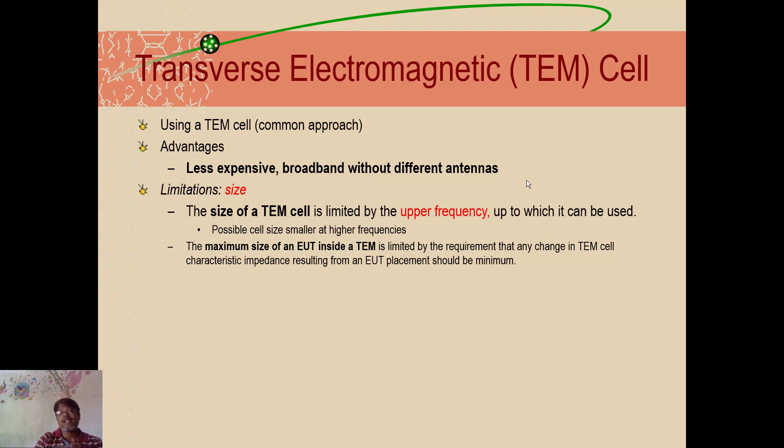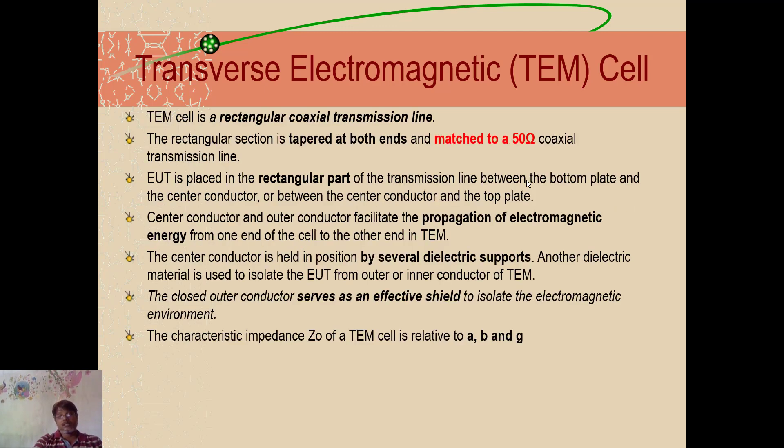And what will be the maximum size of an equipment which can be kept inside the TEM cell is that will be limited by the requirement that any change in TEM cell characteristics impedance resulting from an equipment placement should be minimized. So what your equipment which you're going to keep inside needs an impedance match. Accordingly the impedance match 50 ohm impedance, we have to make it, that will be difficult. So that depends on that, the size is limited.